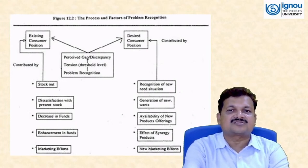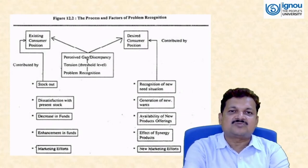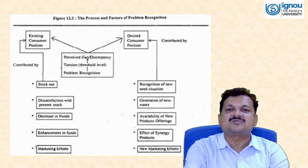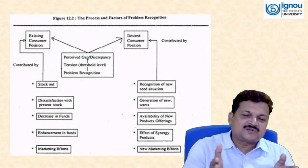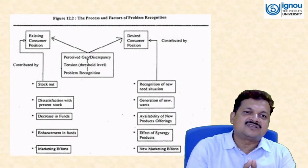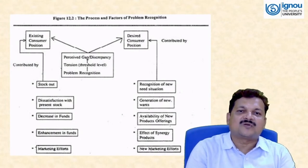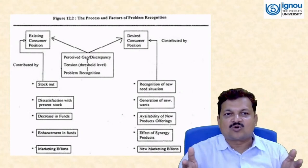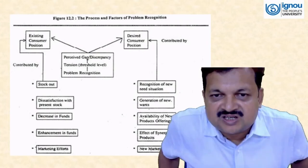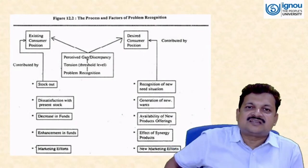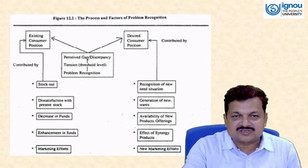So the process and factors of problem recognition involve existing versus desired customer position. If the gap between these two positions is reduced, the customer is tension-free and problem recognition is weak. If the gap is large, problem recognition is very strong and the probability of purchase is high. If the gap is small, the customer is not willing to purchase.